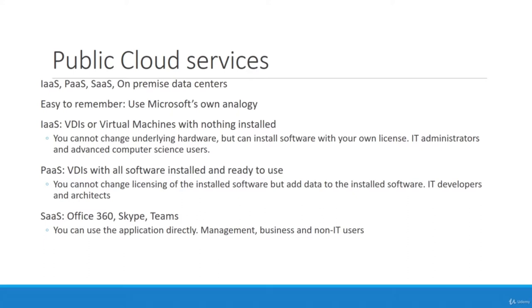Platform as a Service is like a VDI with everything you need already installed. You cannot change the licensing of the installed software, but you add your own data to it. This is familiar to developers who join a new project — you don't install everything from scratch, you get access to a cloud or VDI service with everything installed, then set up your IDE and repository. The platform is already there, ready to go.